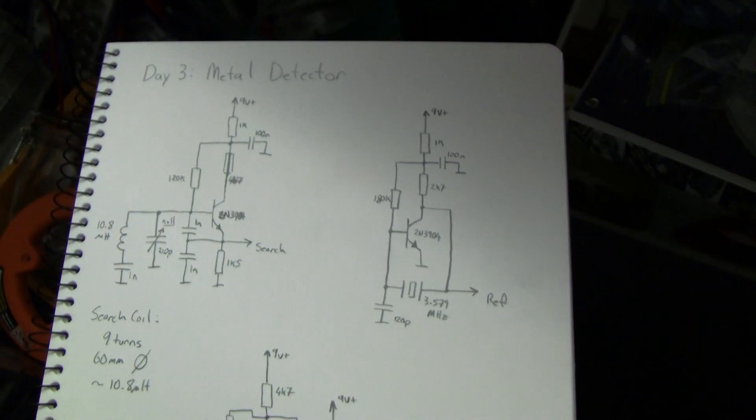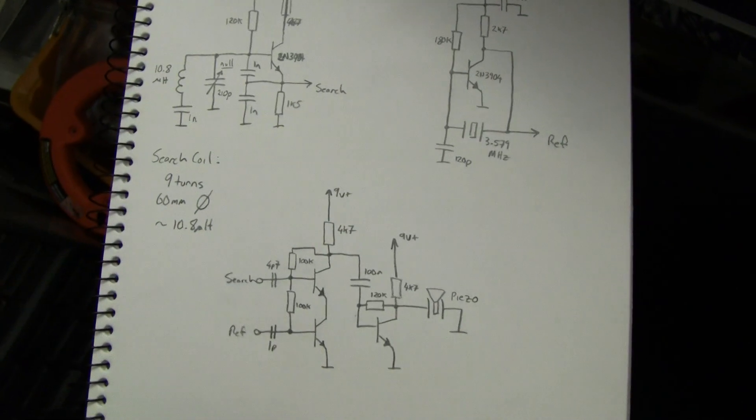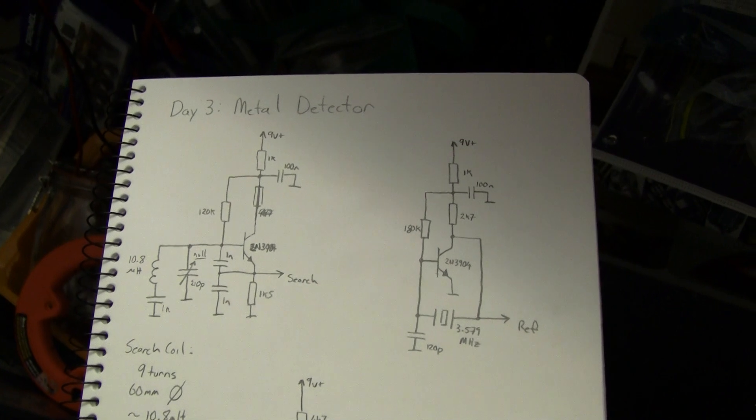The individual circuit modules as you can see here, the oscillator and the mixer, they will probably become useful to us later and they're useful modules on their own.